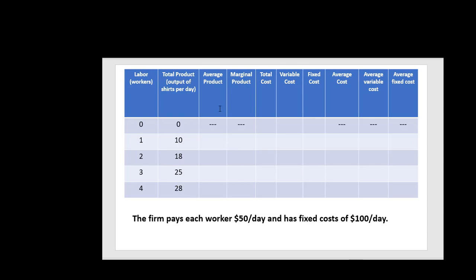And then we have the average product of labor, marginal product of labor, and some various measures of cost. These dashes up here mean those things are undefined. We're going to complete the table. The first thing I'll do is calculate average product of labor. The average product is just the output divided by the number of workers that produce that output.